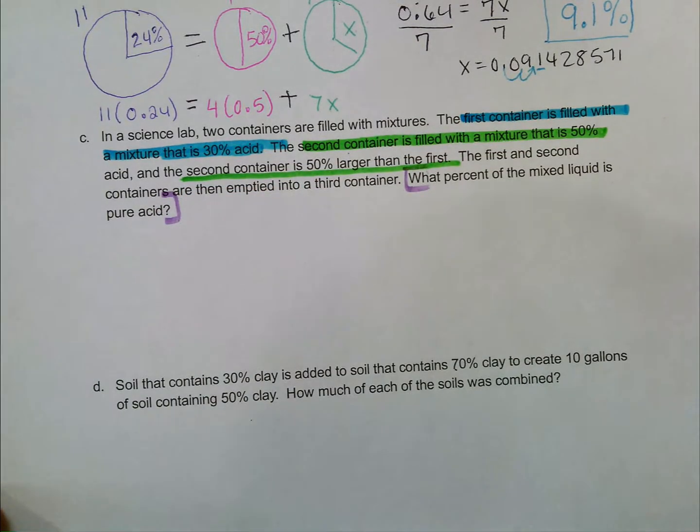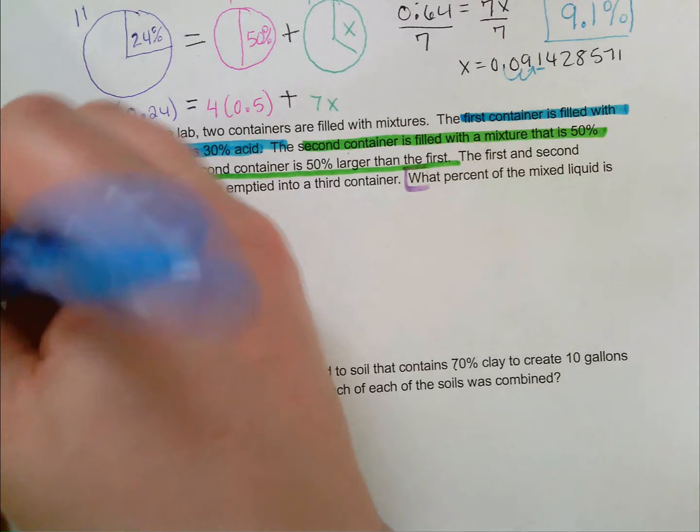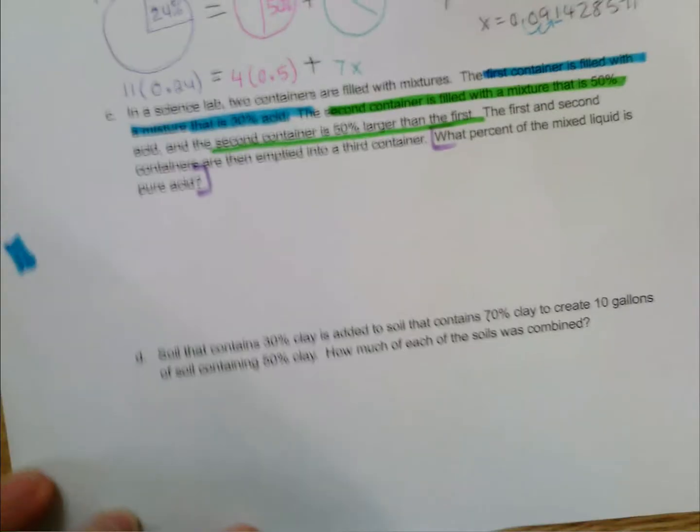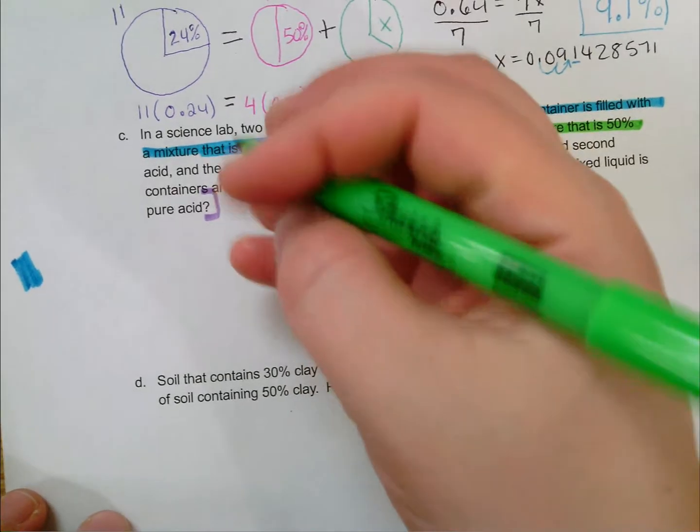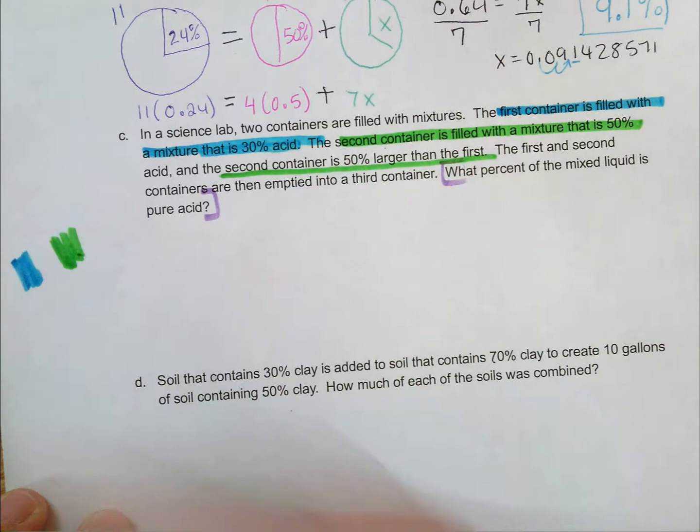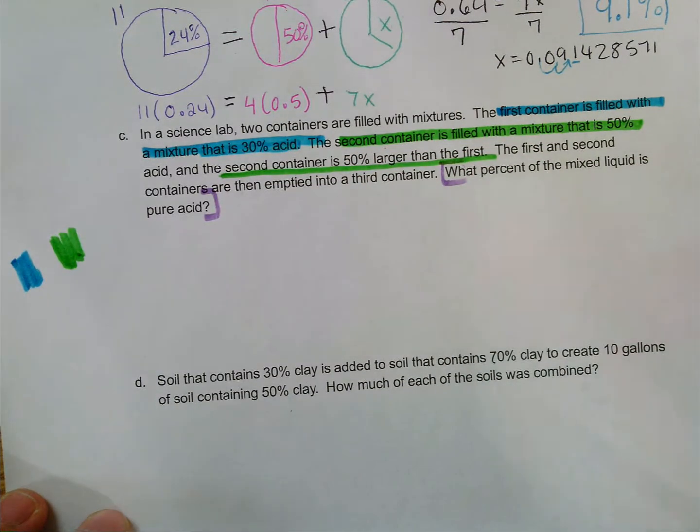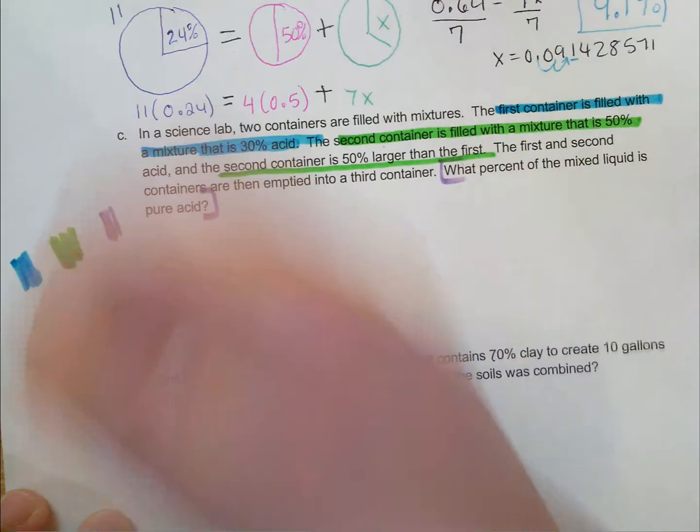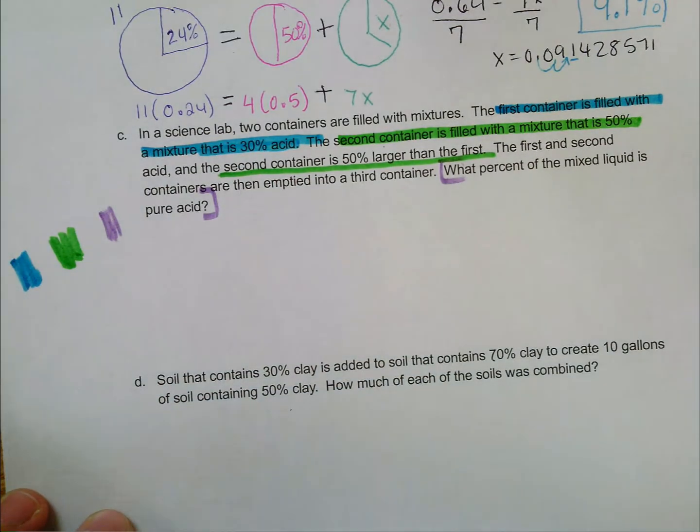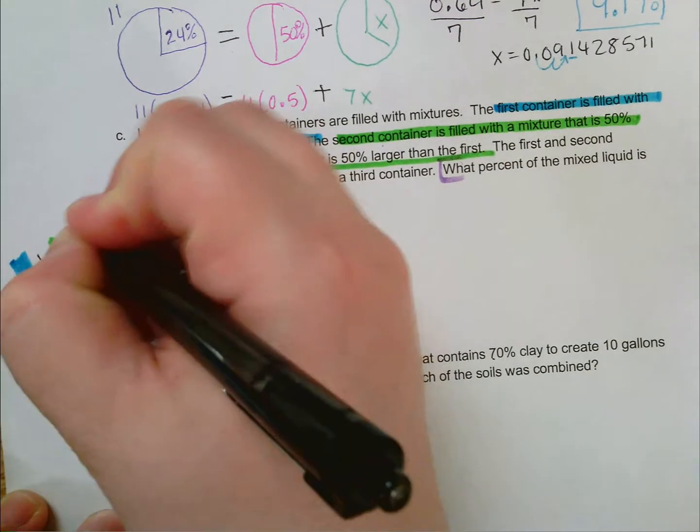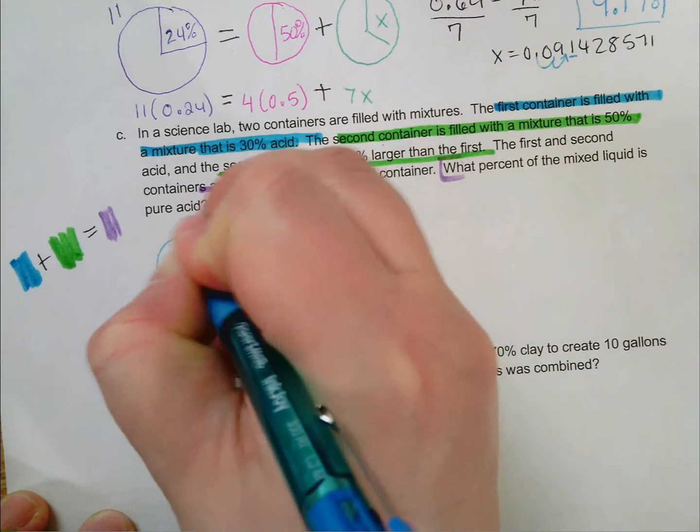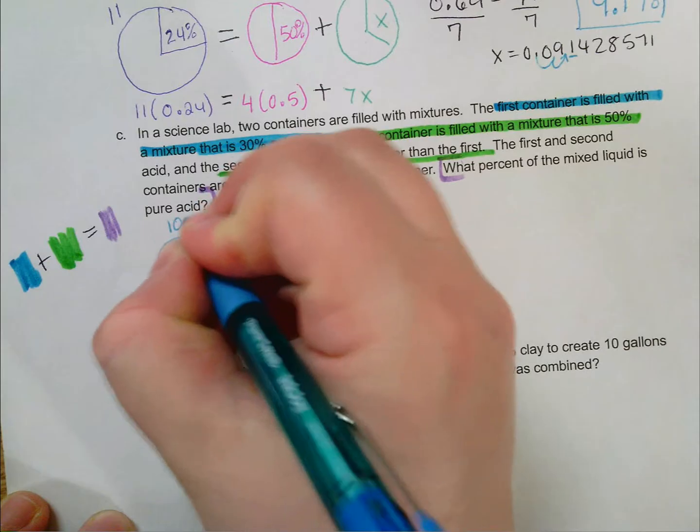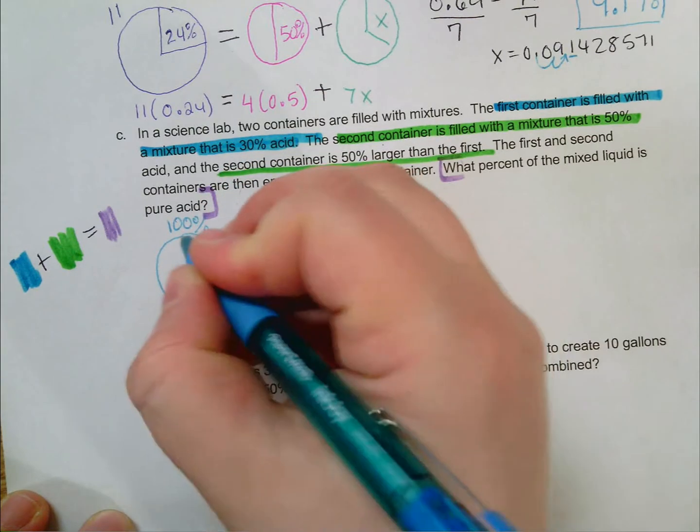So I know when I take blue and I add it to my green amount, I'm going to get some other amount that I'm using to represent with purple. So my first container, I don't know how big it is. I'm going to say it's 100% of itself, and it's 30% acid.